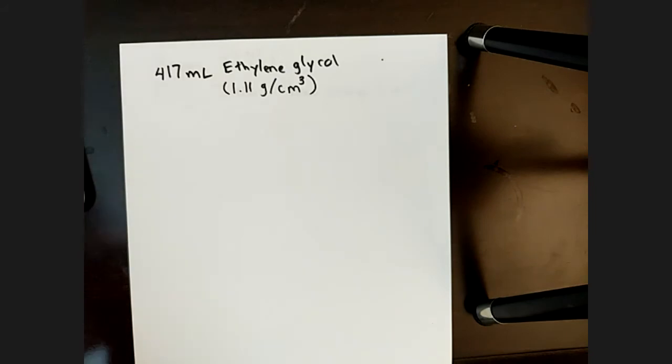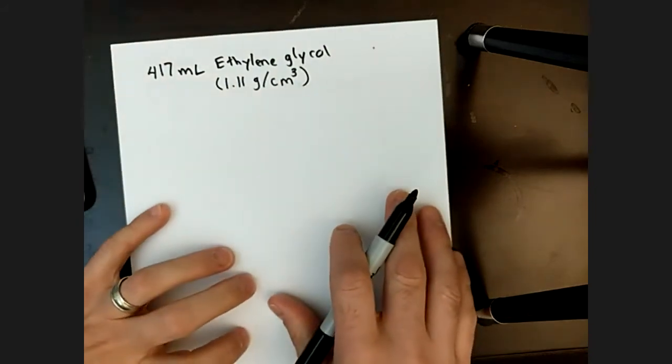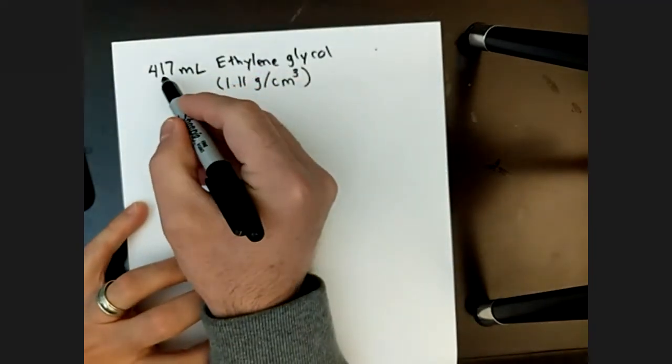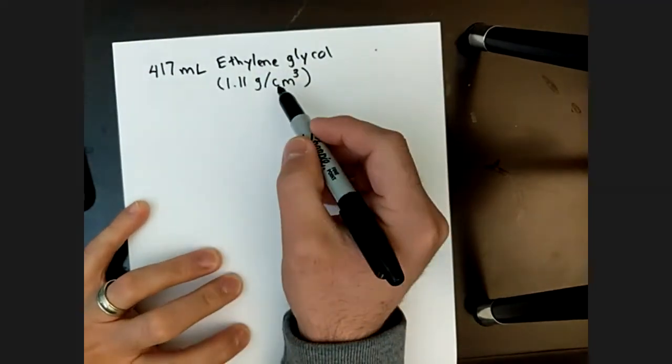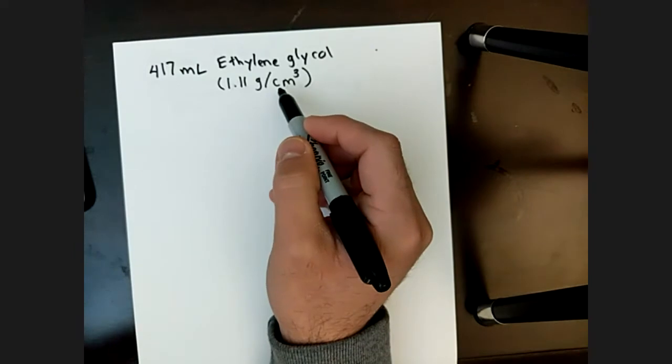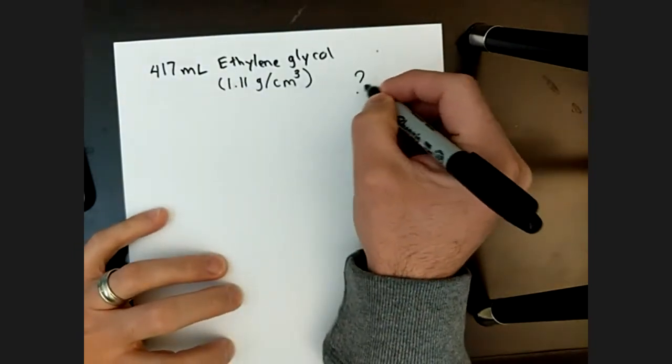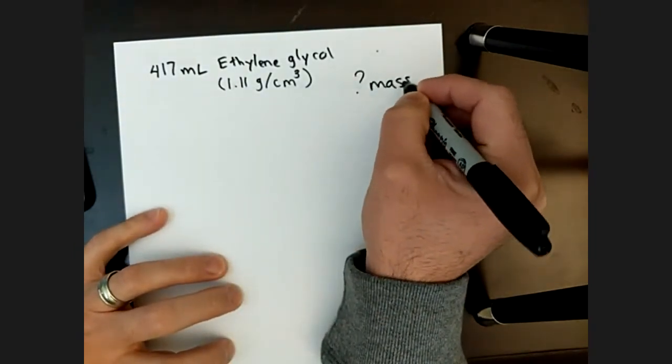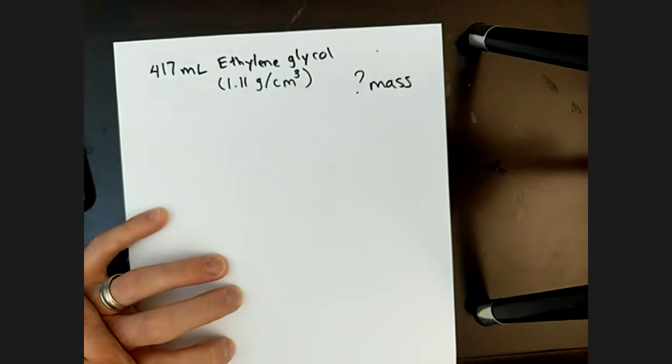Here we get into more of the chemistry practical problem here. We want to know about the mass of ethylene glycol. So we're told we have 417 milliliters of ethylene glycol. We're given the density. We want to know what is the mass.